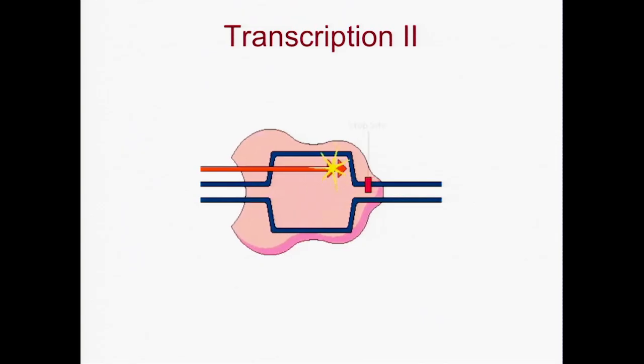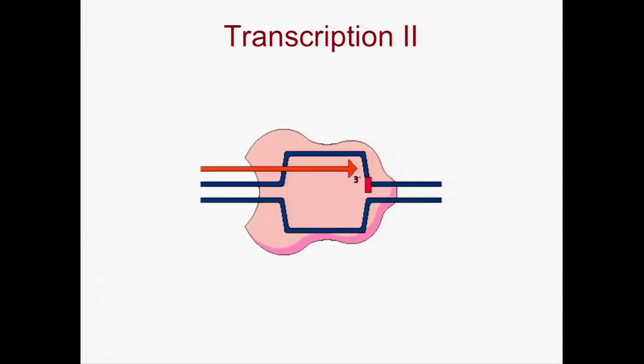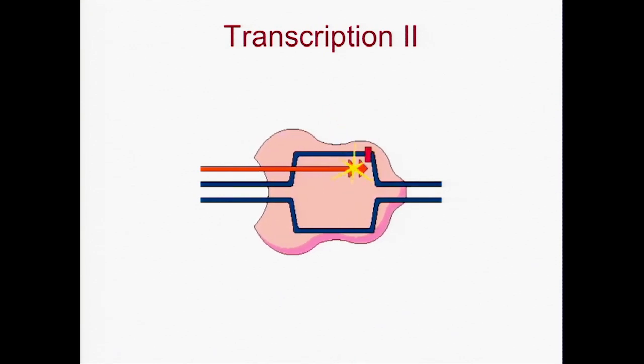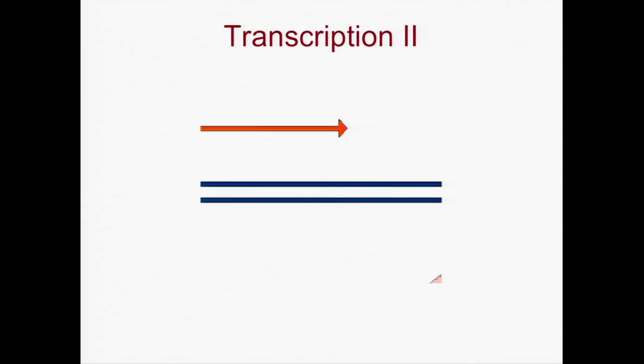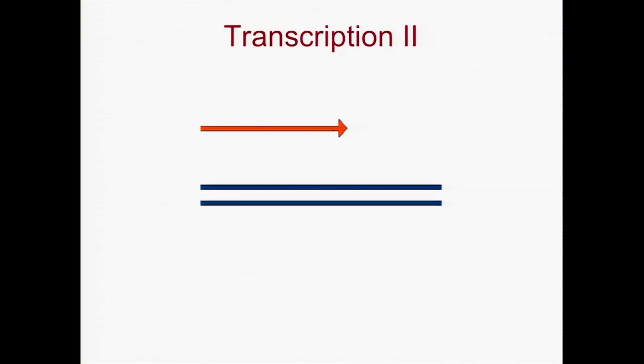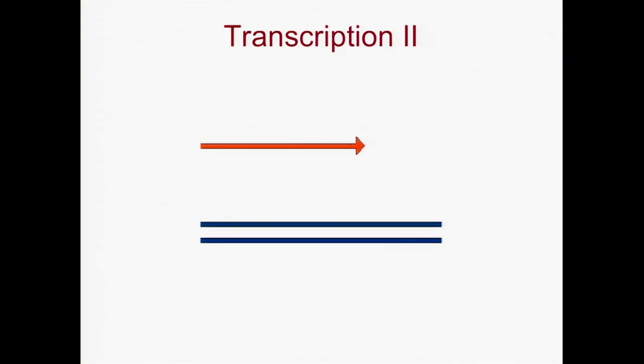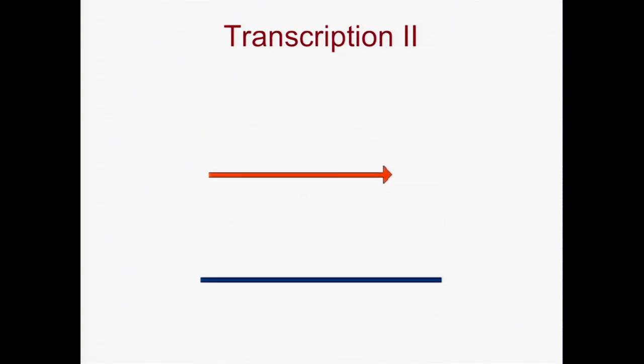RNA polymerase continues to add nucleotides to the three prime end until it reaches the stop site at the end of the transcription unit. The RNA strand dissociates from the DNA and is released. The RNA polymerase dissociates from the DNA and the two DNA strands reunite. Since the transcribed gene codes for a protein, the type of RNA molecule produced is called pre-messenger RNA, or pre-mRNA.